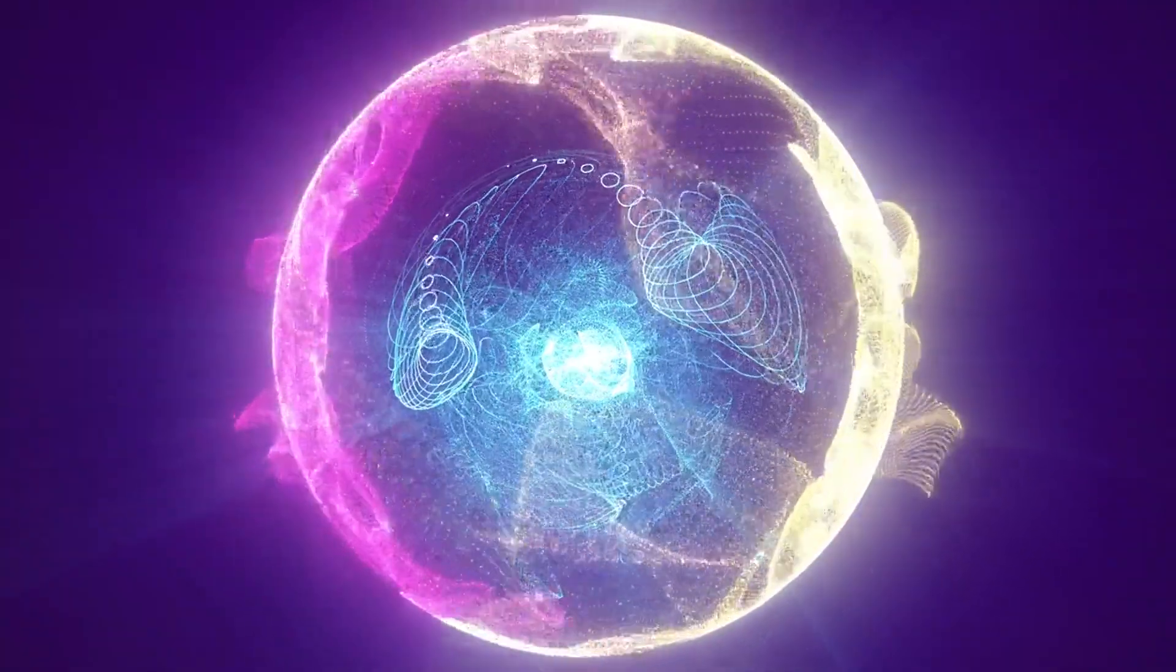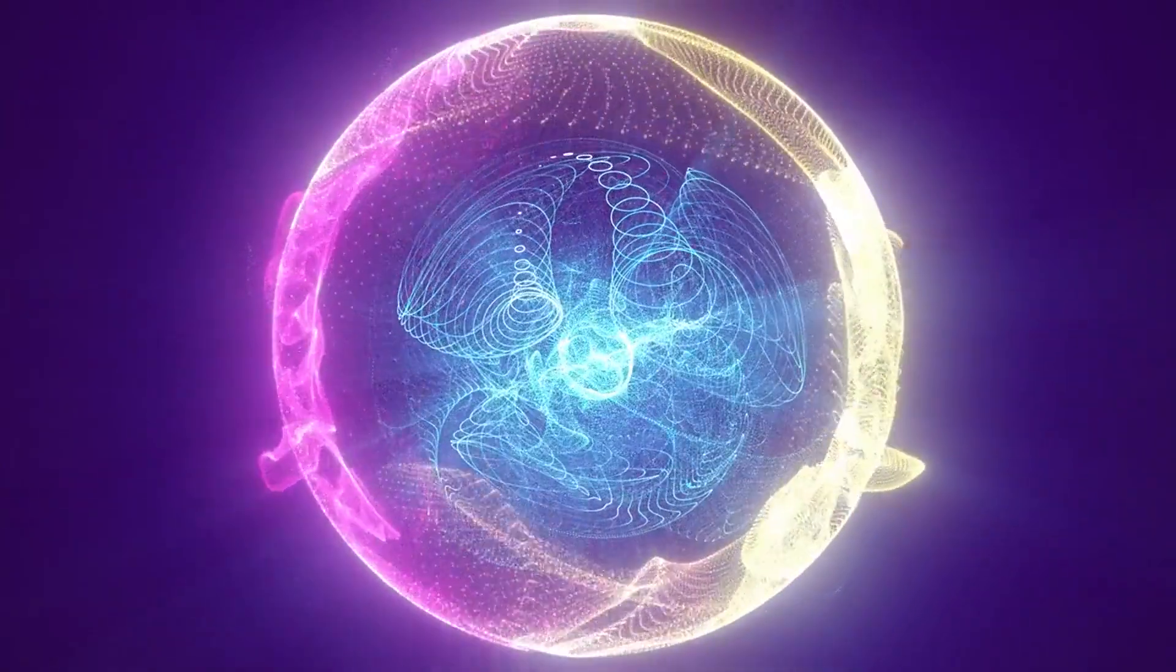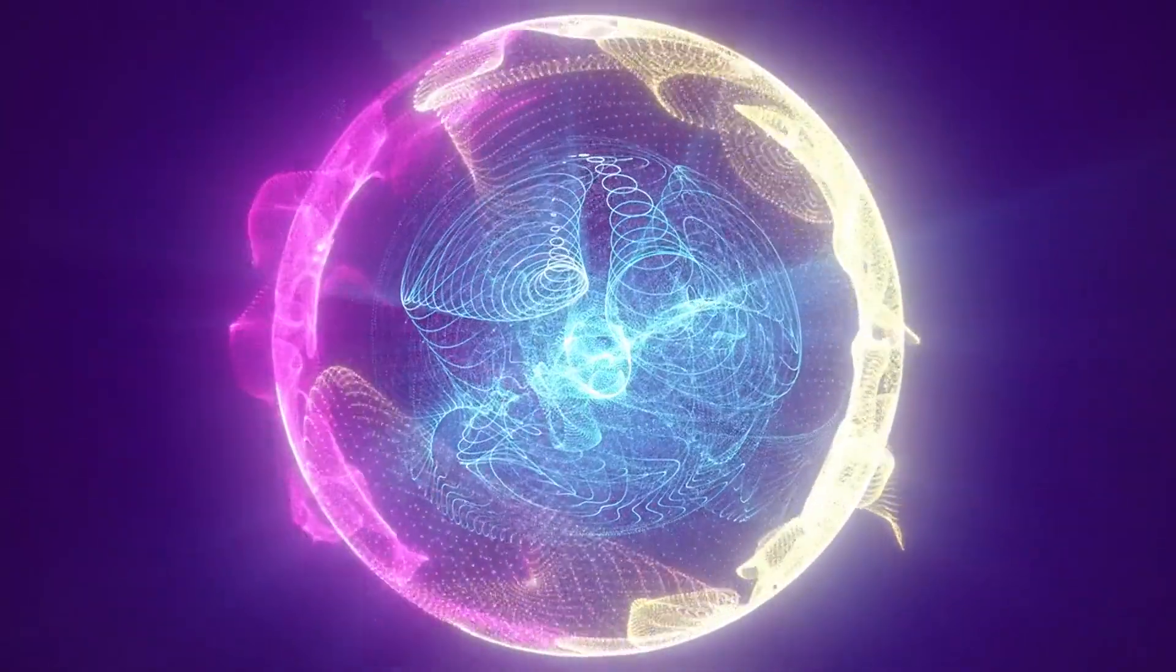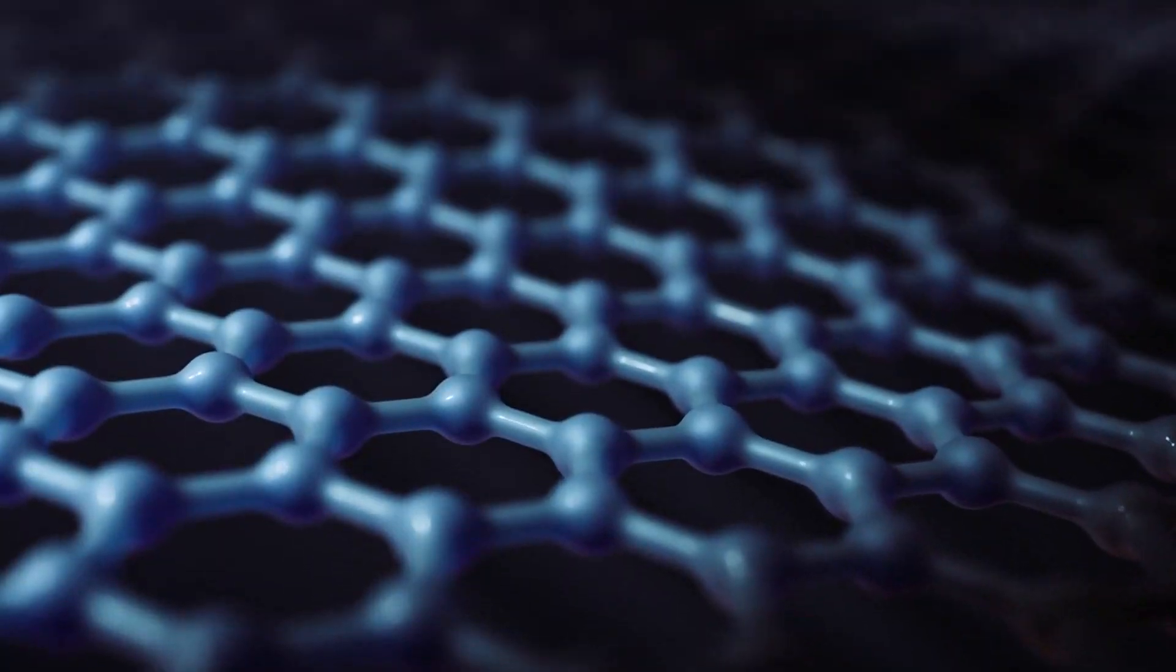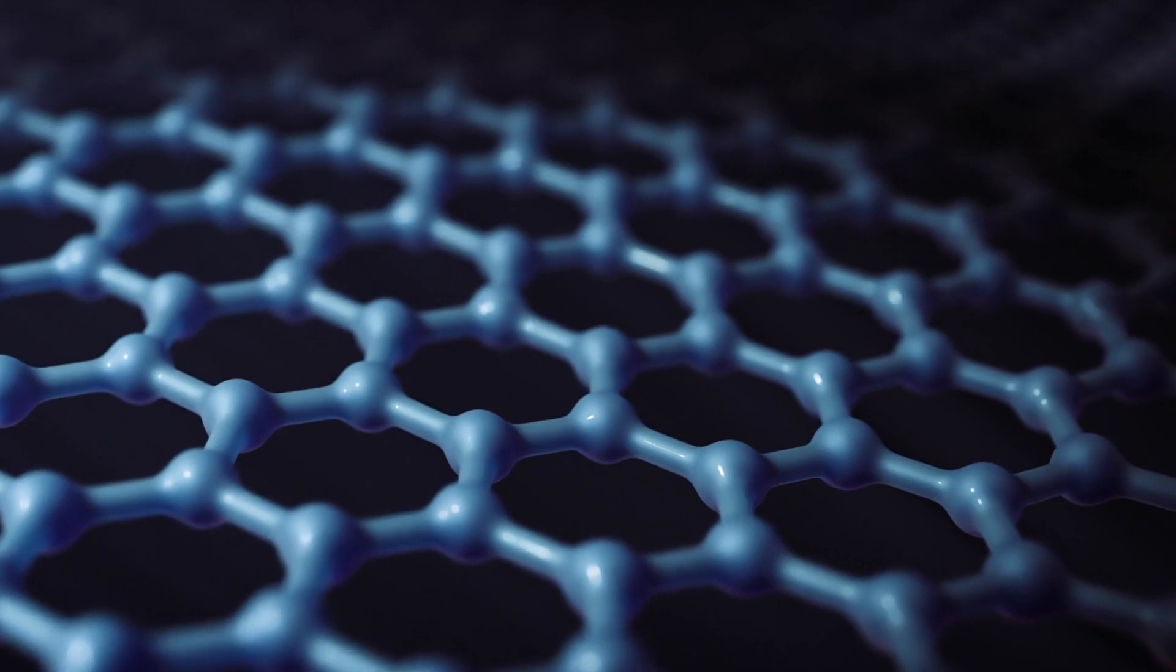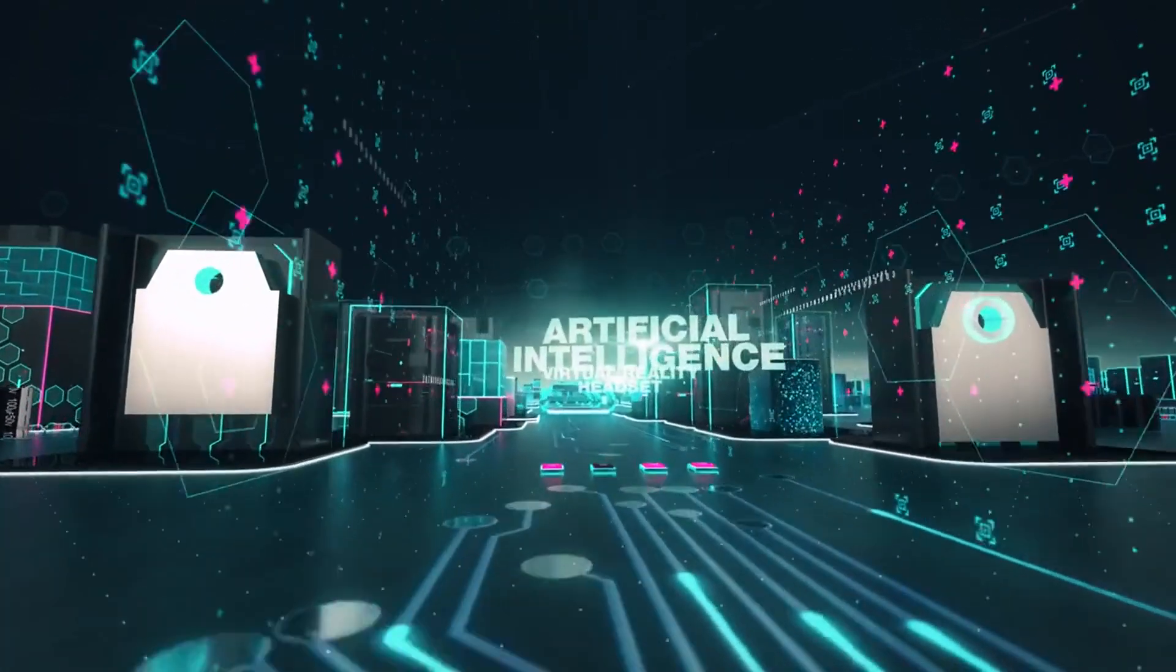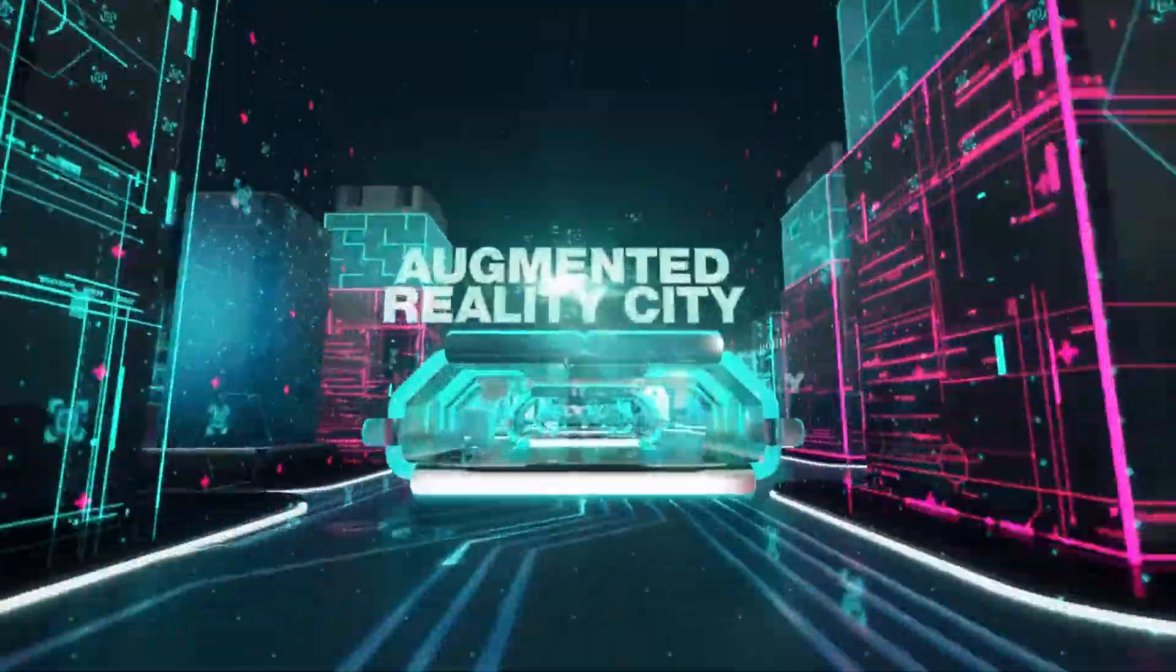In 1951, Julian Schwinger provided a theoretical framework for creating matter from nothing using strong electric fields. This idea, which seemed purely theoretical, has been brought to life through experiments with graphene. Researchers at the University of Manchester observed this effect using a graphene-based superlattice, where electrons and holes, the absence of electrons, were created from the quantum vacuum by applying an electric field.